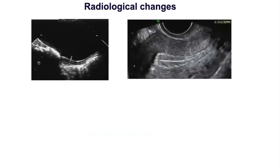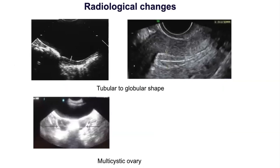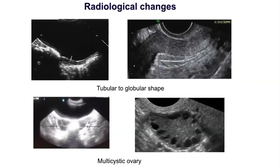Ovarian development is the first internal change in female puberty. Pubertal ovaries have multiple cysts arranged centrally, in comparison to the peripheral distribution seen in PCOS. This multicystic ovarian appearance may lead to a false or exaggerated diagnosis of PCOS.